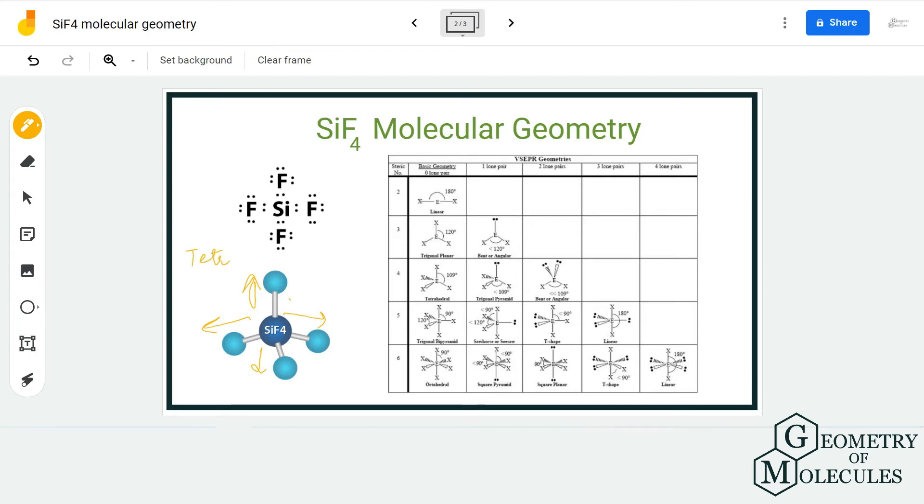confirm it further, we are going to use the formula of steric number to find out if we are on the right track. So to find out the steric number, we need to know the electron regions around the central atom. Here there are four electron regions, as it is forming bonds with four fluorine atoms, and there are no